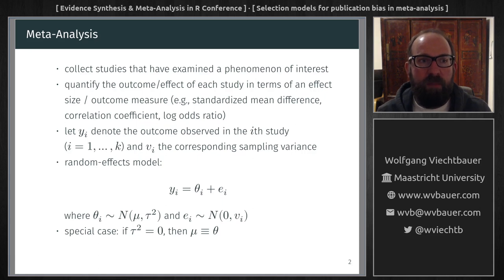So when we conduct a meta-analysis, we collect the studies that have examined some phenomenon of interest and we quantify that phenomenon in terms of some effect size or outcome measure. And then we can analyze these estimates using, for example, a random effects model to estimate the average true effect and the variance in the true effects. A special case, of course, arises if there is no variance in the true effects, then the model collapses down to a fixed effects model and we estimate the true effect.